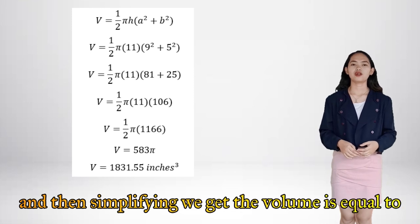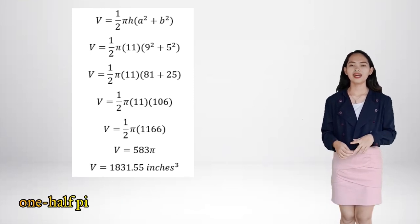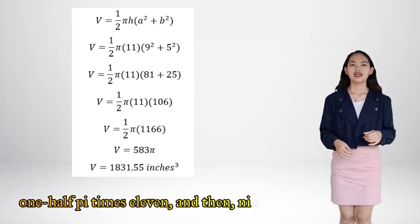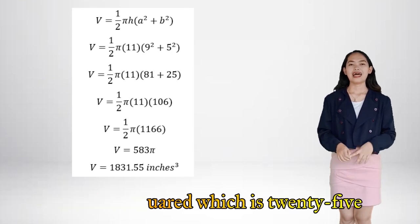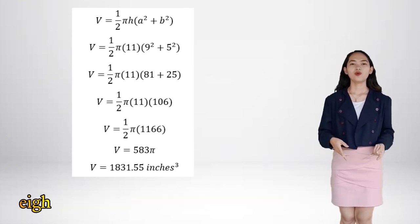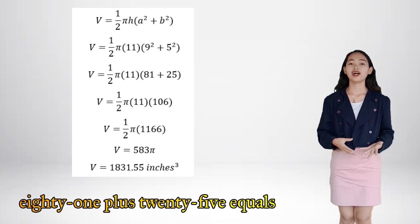And then simplifying, we get the volume equals one-half pi times 11, and then 9 squared is 81 plus 5 squared which is 25. And then we added 81 plus 25 equals 106.